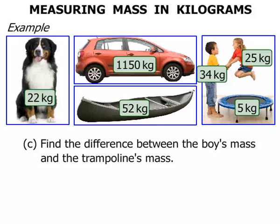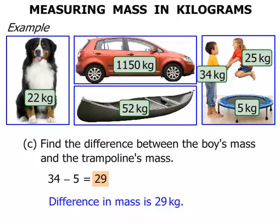This next question asks us to find the difference between the boy's mass and the trampoline's mass. The word 'difference' means we're going to subtract. The boy's mass is 34 and the trampoline's mass was only 5, so we subtract 5. 34 minus 5 — we should be able to do that mentally. We get 29, so the difference in mass is 29 kilograms.